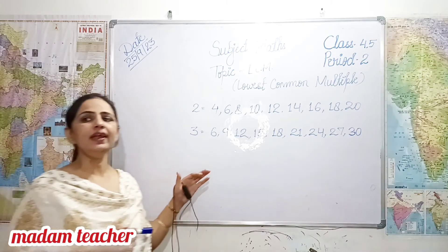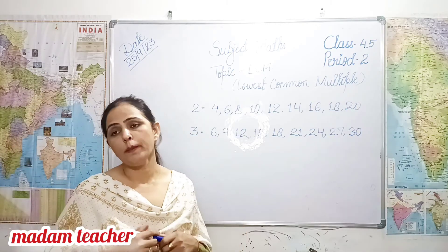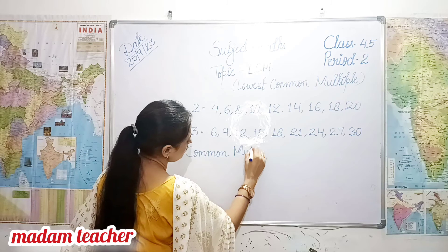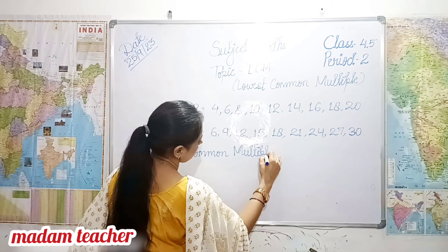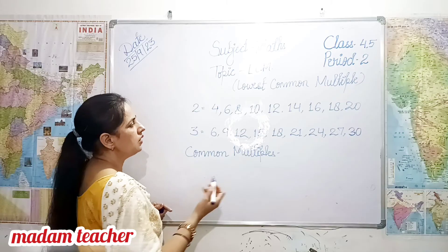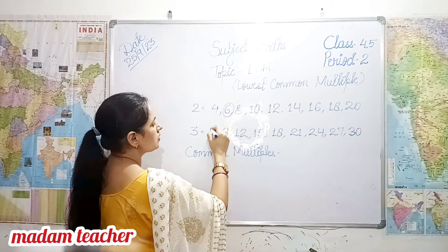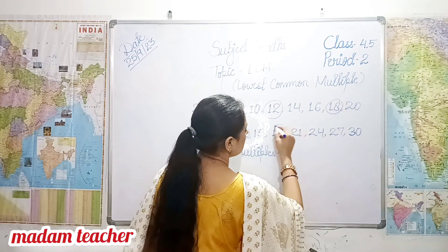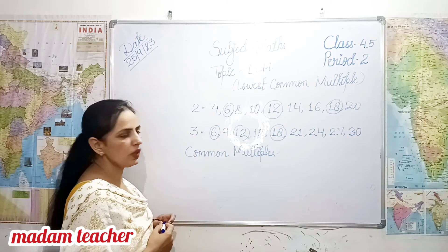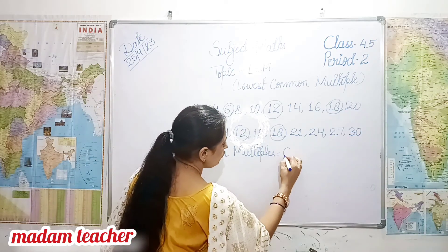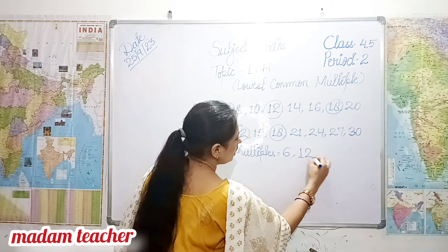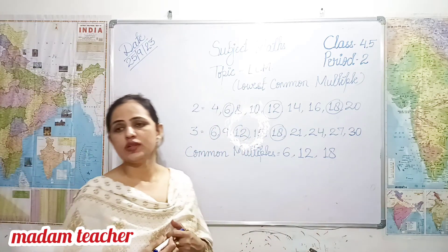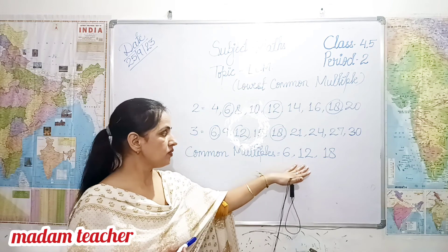So these are the multiples of 2 and 3. We will find out the common multiples. The common multiples are: 6, 12, and 18.